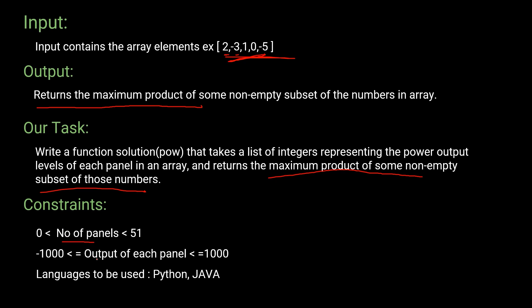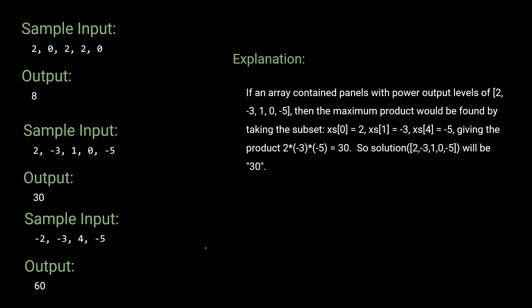For the constraints: the number of panels will be between 0 and 51, and the output of each solar panel will be between -1000 and +1000. This challenge was from Google, not proposed by me. Google restricted the solution to either Python or Java, so I will be using one of these languages to solve the question.